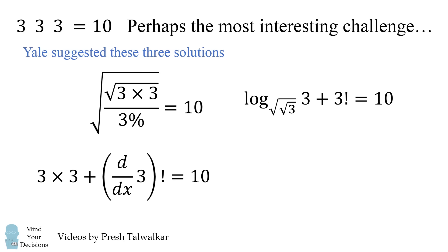Another way is that you take 3 times 3, that'll be 9, and then you add the following. You take the derivative of 3, which is 0, and then 0 factorial is equal to 1. So we have 9 plus 1, and that equals 10. Amazing!